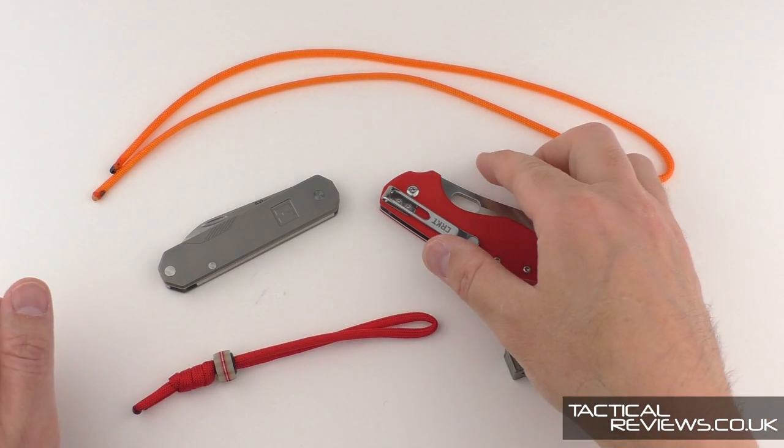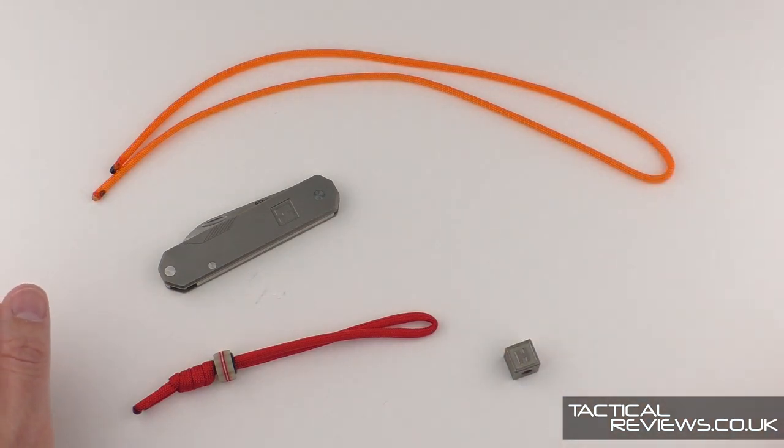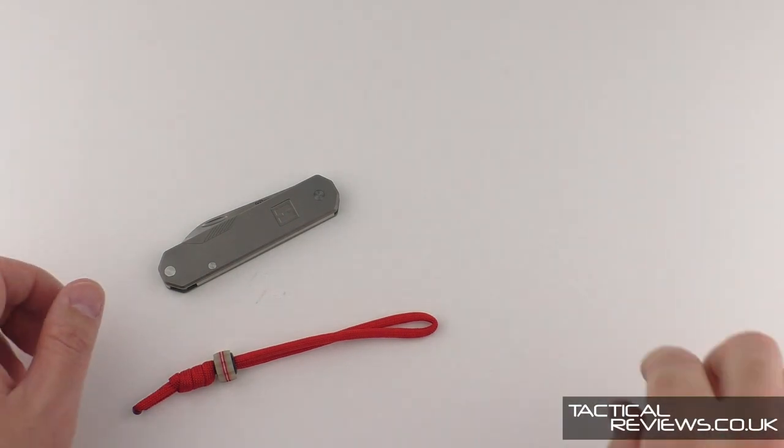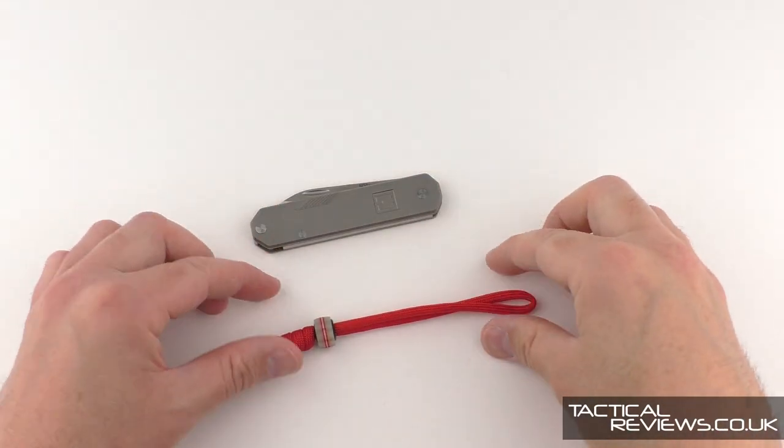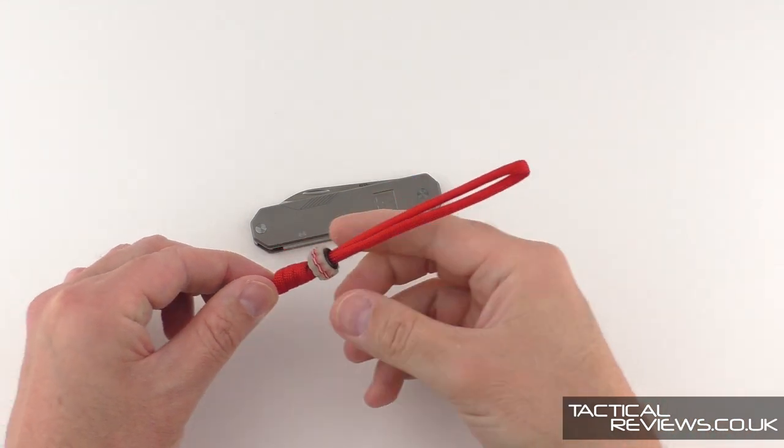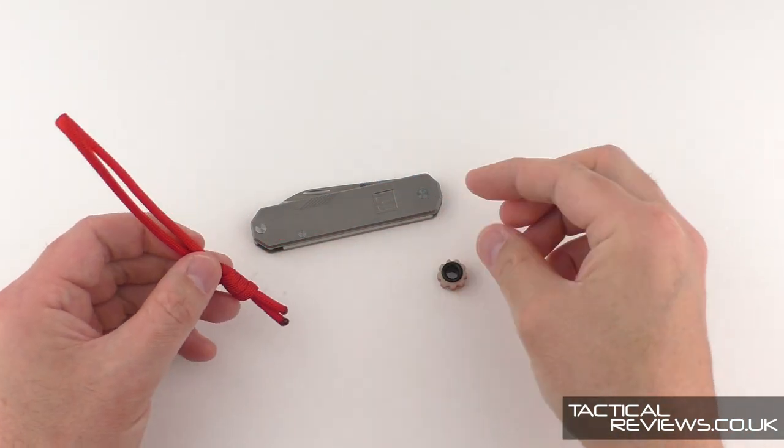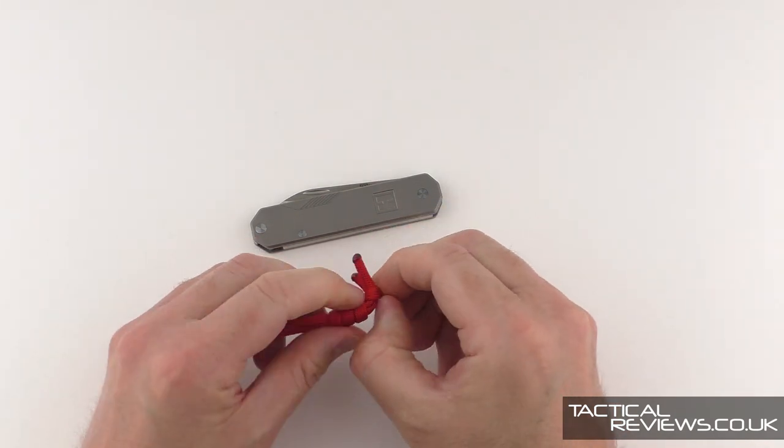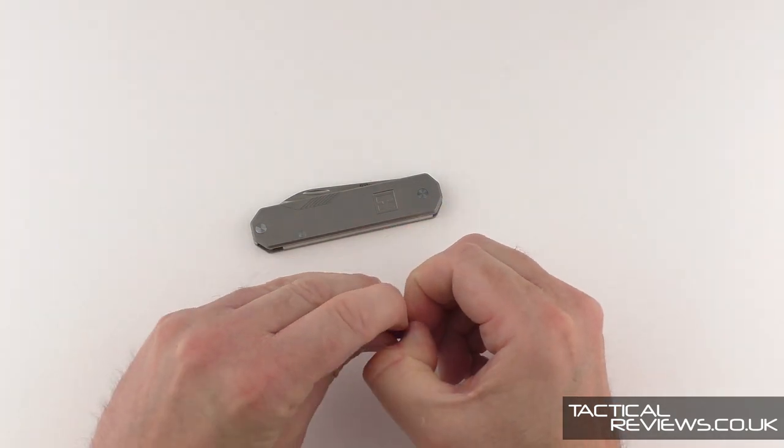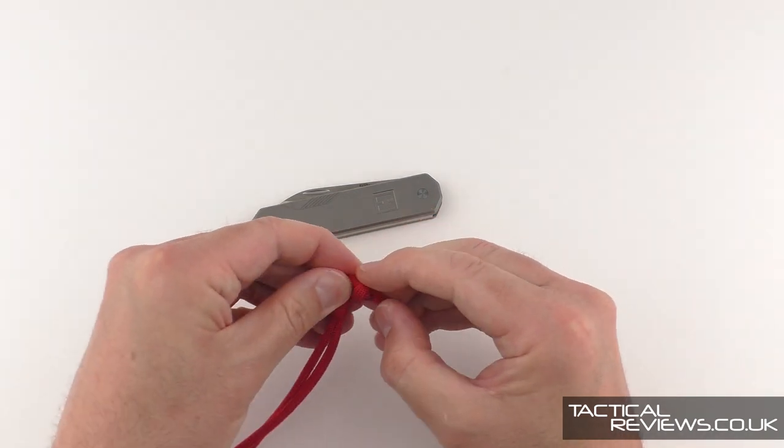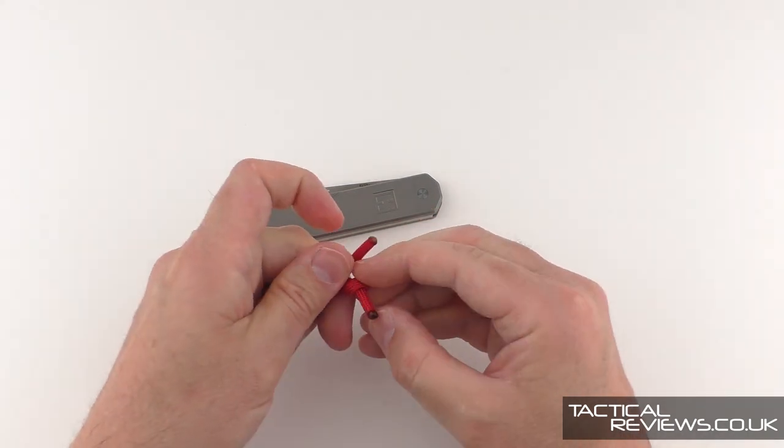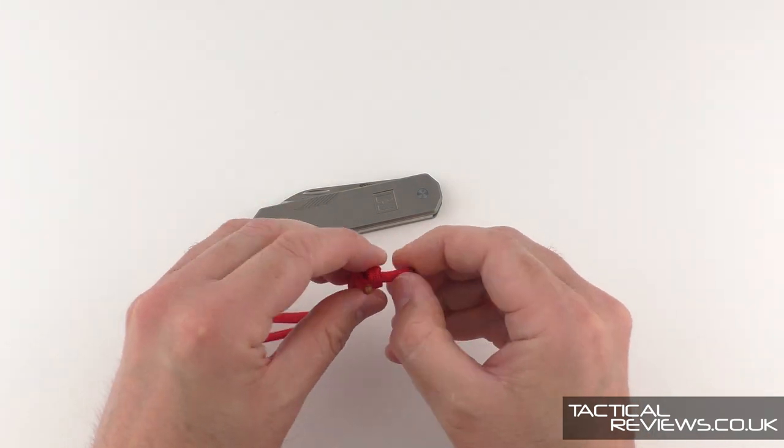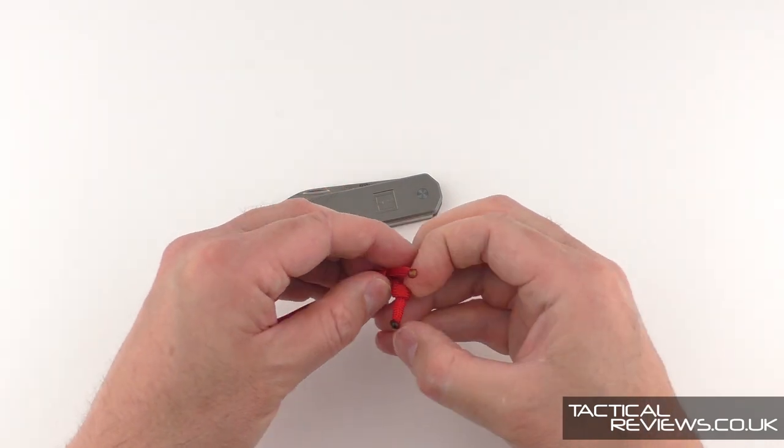I'm going to start with the Penfold and Cog Bead and use the paracord that's been supplied with it. I'm just going to untie that so we can start the process. There's going to be two knots that I use: the Snake Knot and what's called a Lanyard Knot.